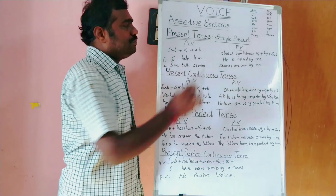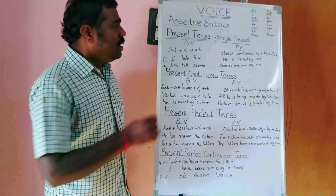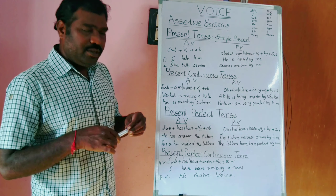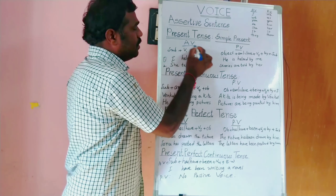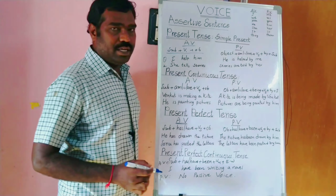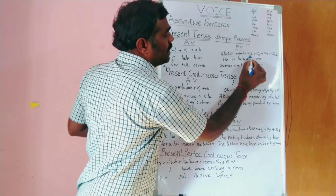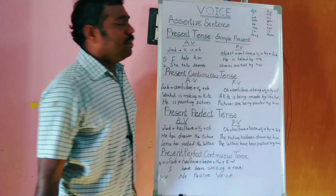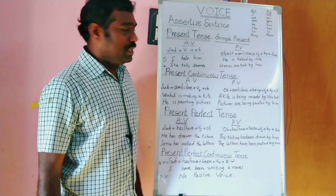In present tense, first two — simple present. Simple present tense, active voice and passive voice. Active voice structure: subject + V1 + object. Passive voice structure: object + am/is/are + V3 + by + subject.